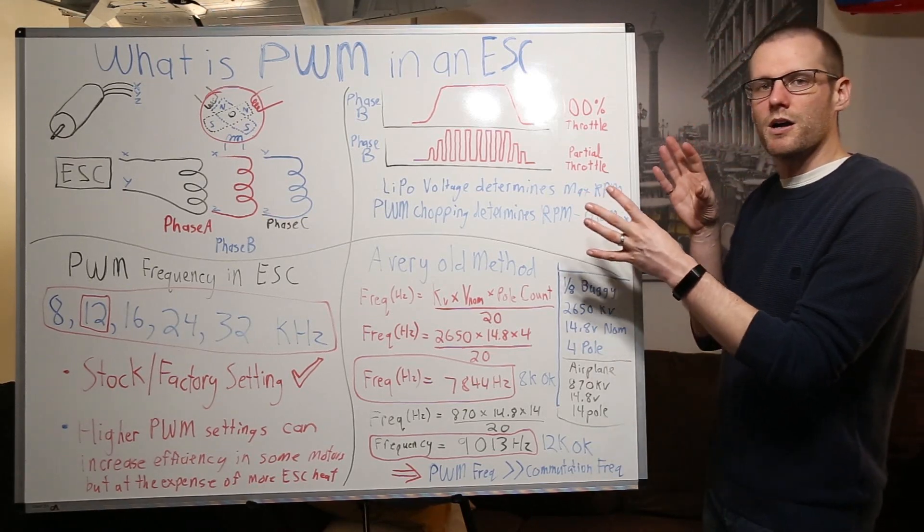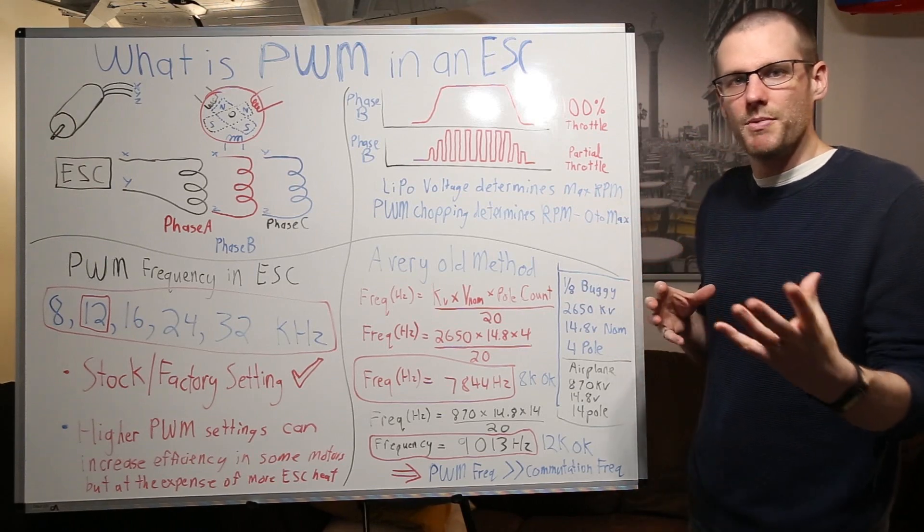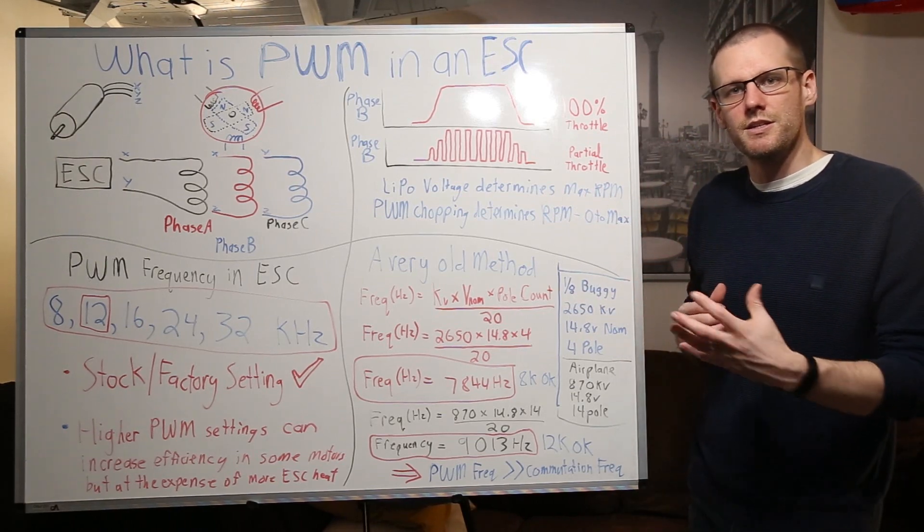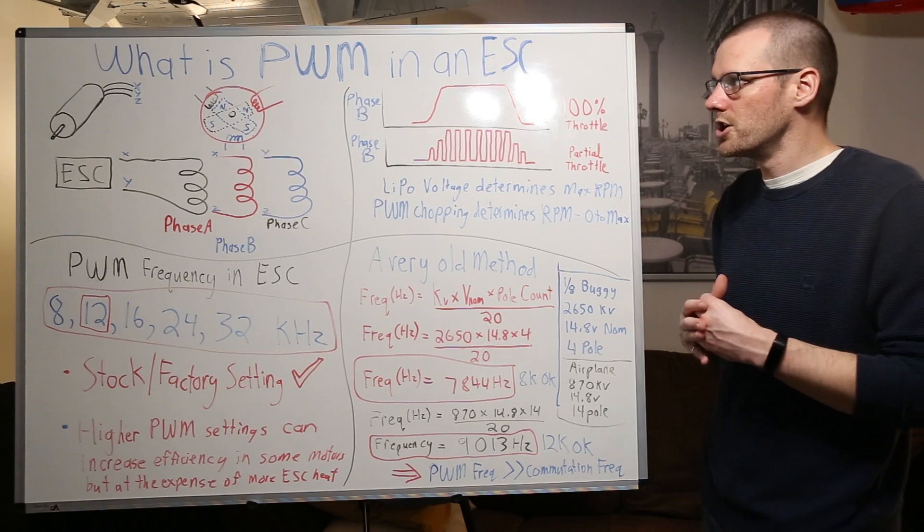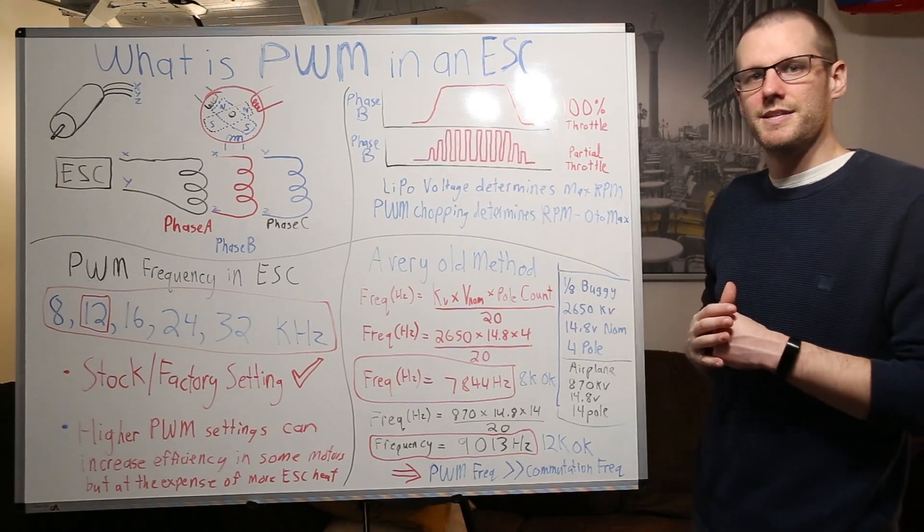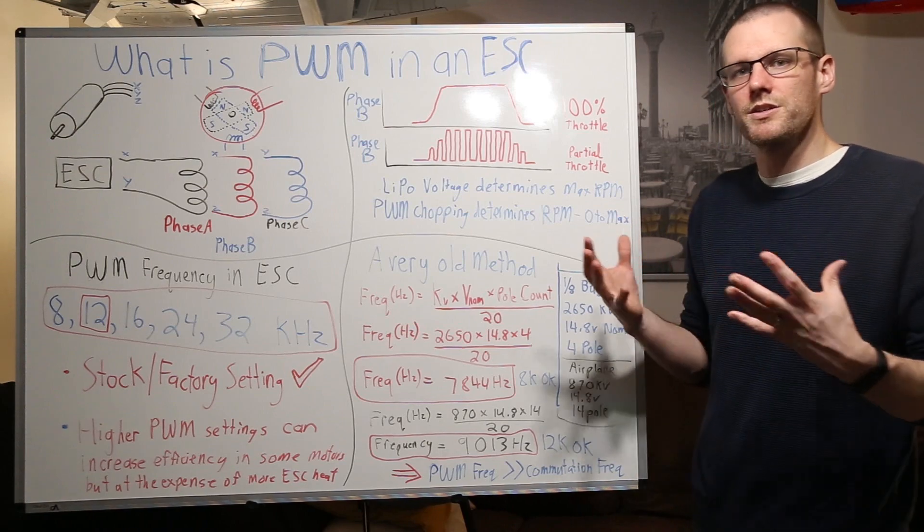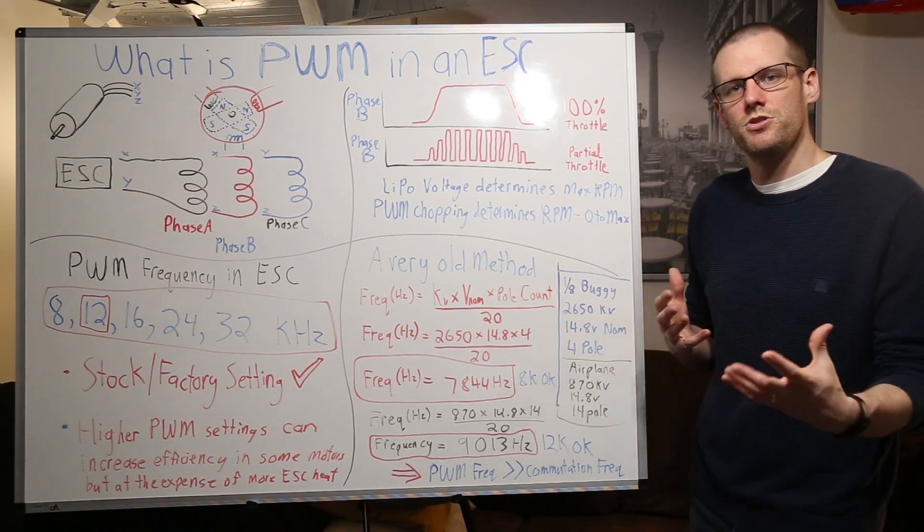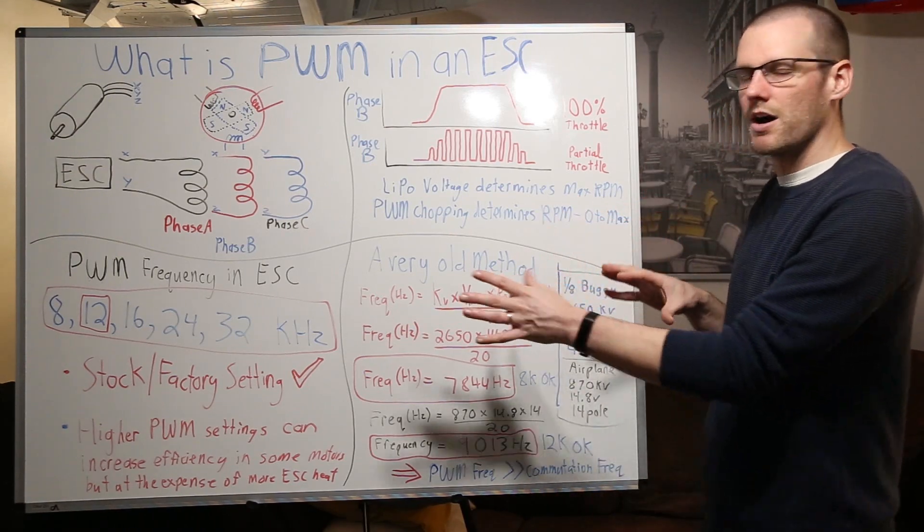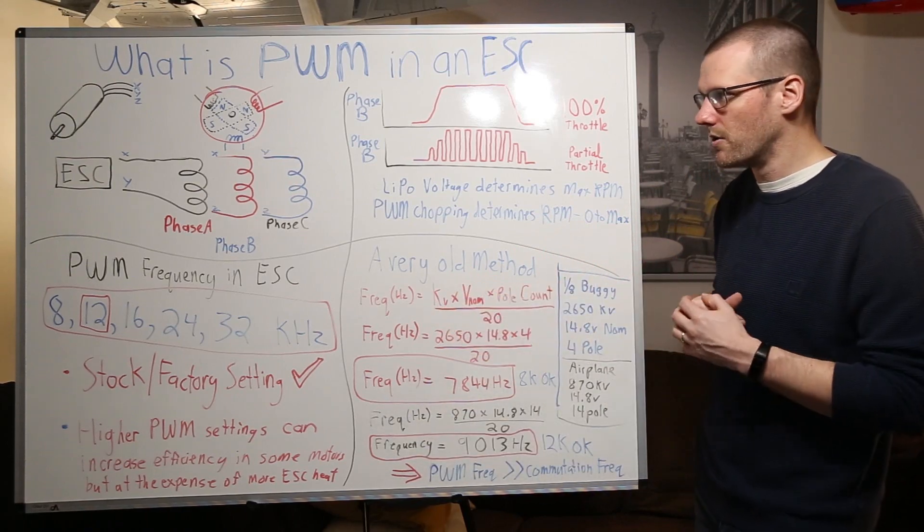We're also going to talk about something that you may or may not have known. Some ESCs are actually programmable where you can change the PWM rate. Does that make your motor faster? Does that make your motor slower? What does it ultimately do to the motor and should you be changing it? That's something that we'll talk about in the slides below up on the whiteboard.